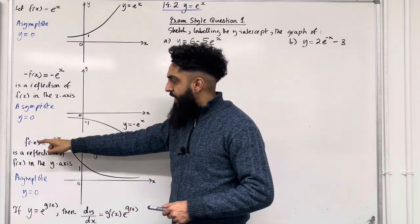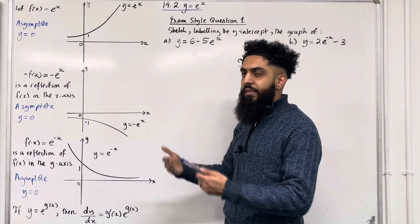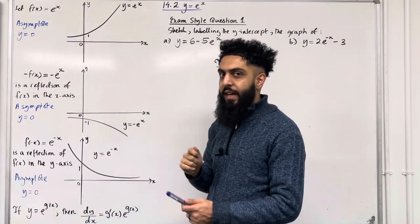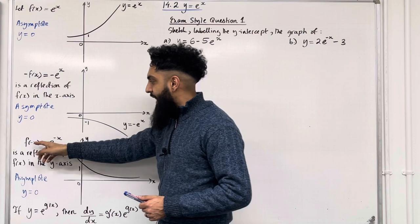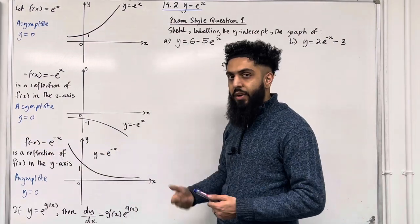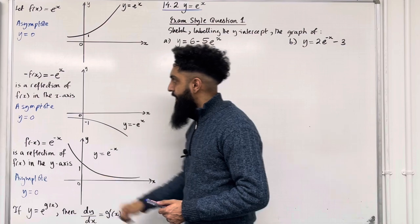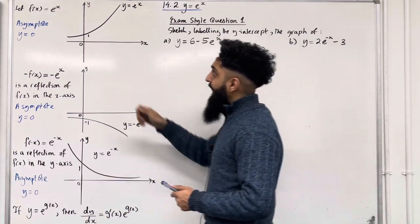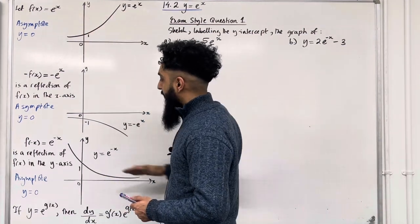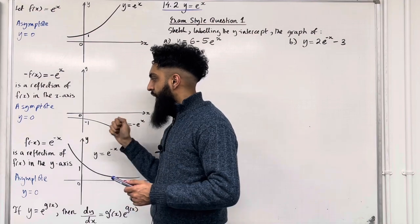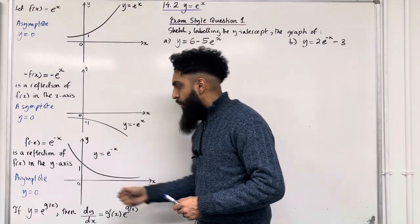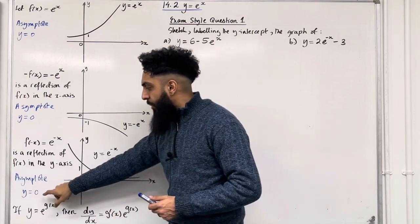f of minus x: if I go back to f of x equal e to the power x and replace the x's with minus x, then f of minus x is equal to e to the power minus x. It is a reflection of f of x in the y-axis. So if I take y equal f of x and reflect in the y-axis, I get something like this. This curve does not cut the x-axis, hence the equation of the asymptote is y equal 0.